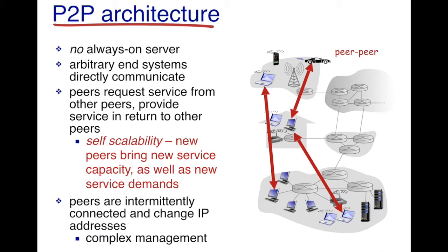The way a peer-to-peer architecture works is every peer that enters into the system brings some amount of capacity in terms of network bandwidth, and then it has some content which it can share with other peers, and it also requires certain content which it can download from other peers.